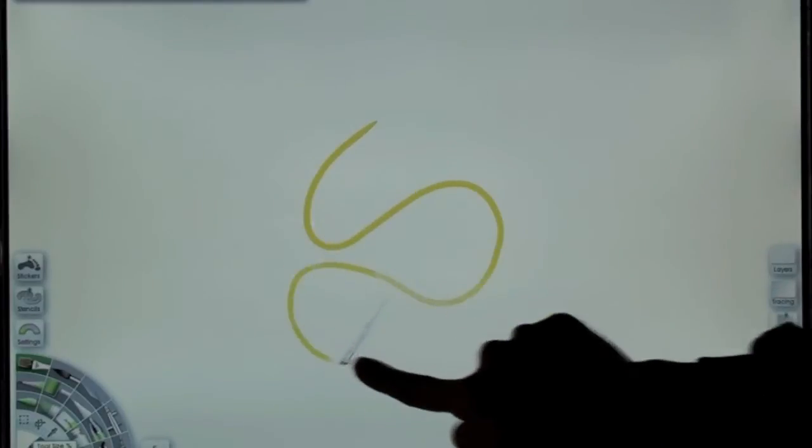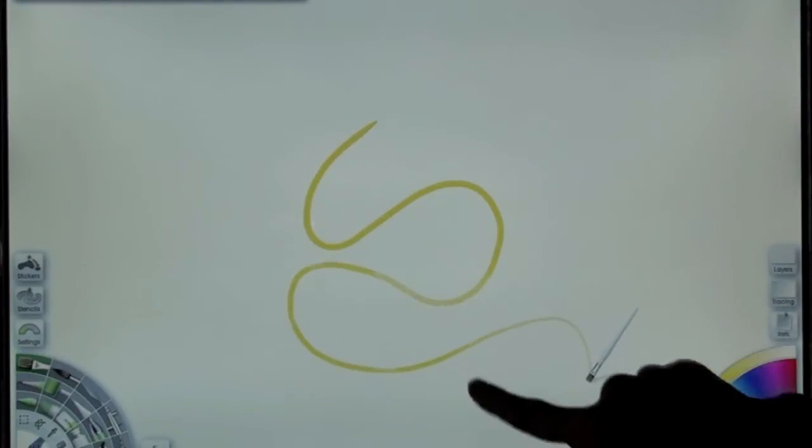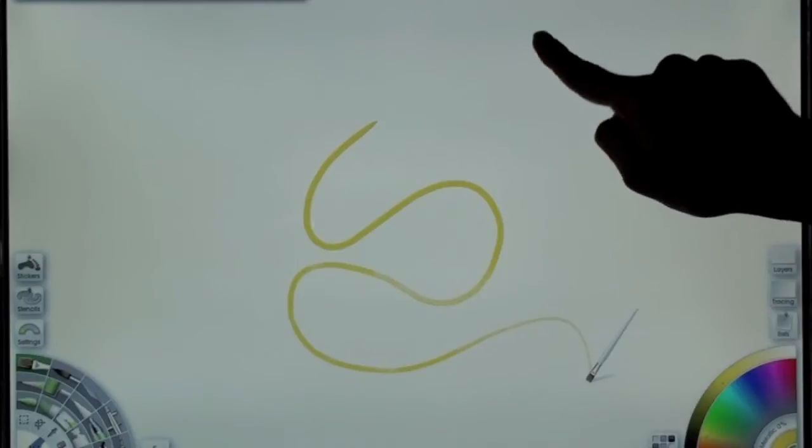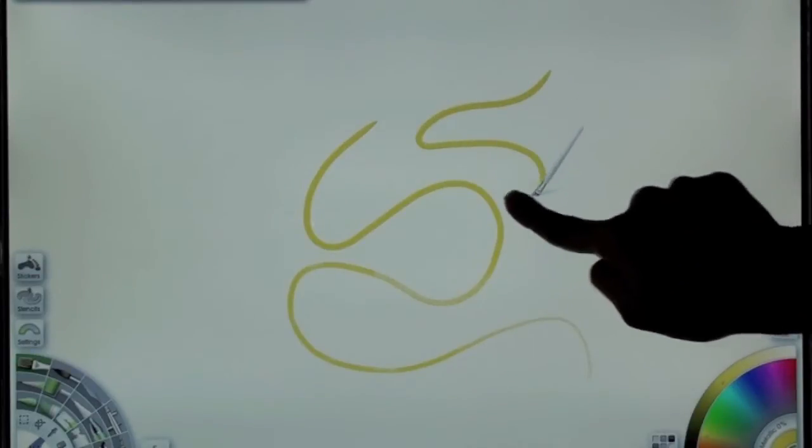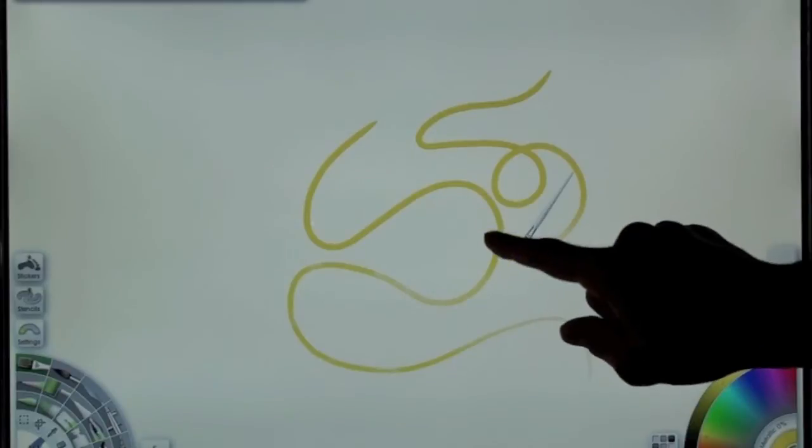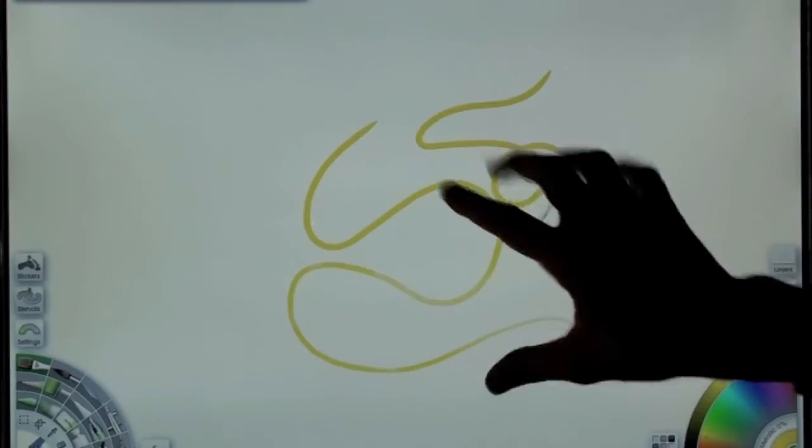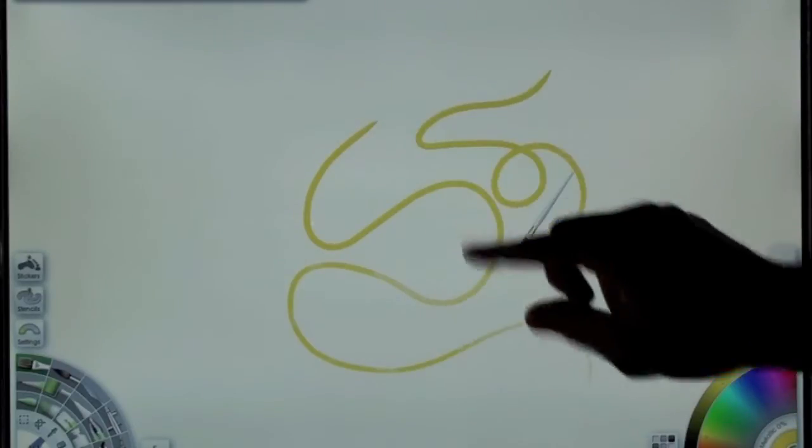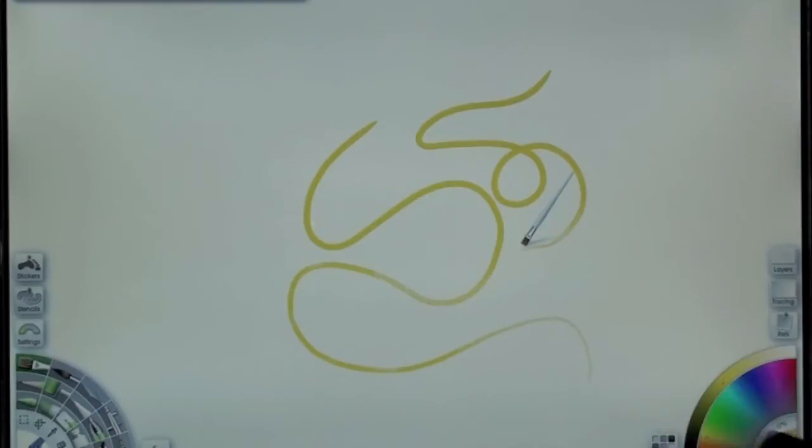I can use my finger to paint with, to draw with. And as you can see, I run out of paint. So it starts to thin out, but it reloads every time I touch the screen. I'm not using any pressure. Optical sensors are sensing the position of my hand, of my finger.